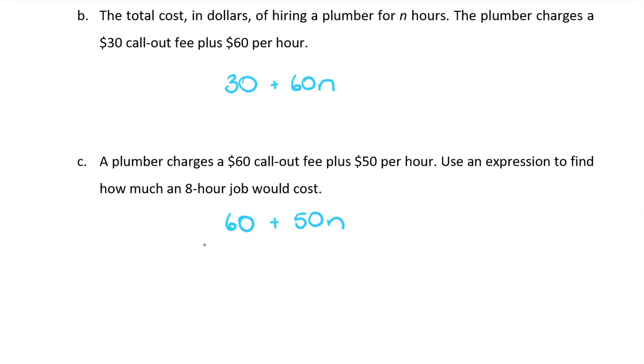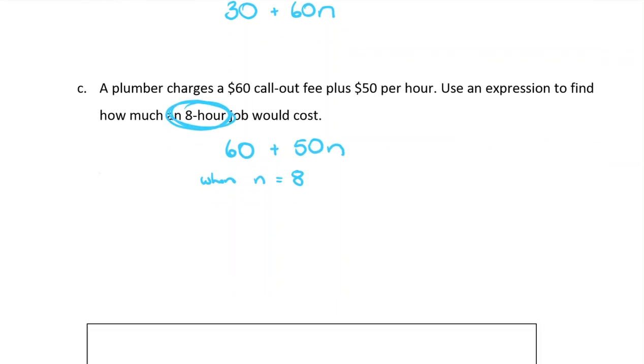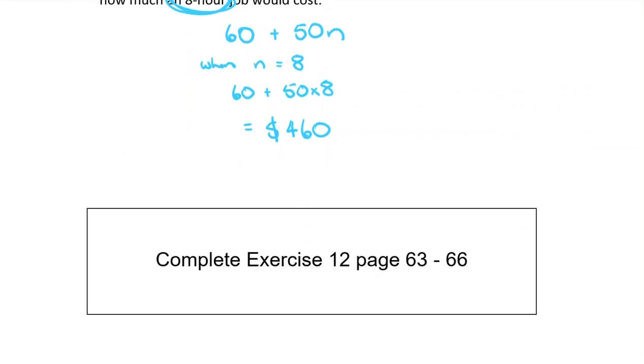The extra part is that we also know that N is going to be equal to 8 because we're told that they're doing an 8-hour job. So I'm going to sub N equals 8 into that expression, which would be 60 plus 50 times 8. And when you calculate that, you work out that the plumber will charge $460. So that leads us to exercise 12.